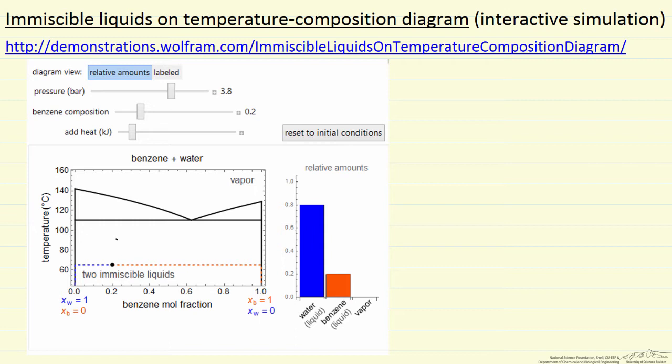We have two liquids, water and benzene, and on the left we plot the phase diagram, and on the right we're showing in a bar graph the relative amounts of each phase.